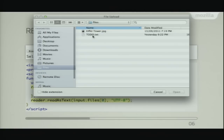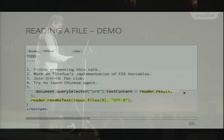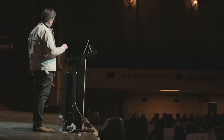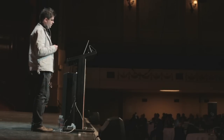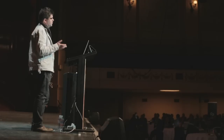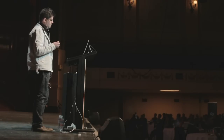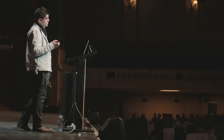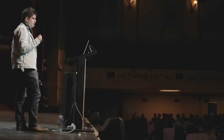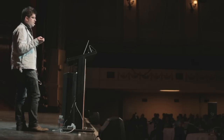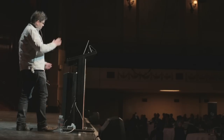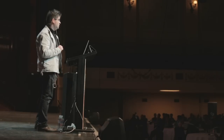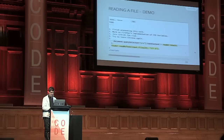There we go — it's displaying the contents of the file right there. That encoding parameter passed into readAsText is actually optional. If your file is in a Unicode encoding like UTF-8 or UTF-16, the browser will use some heuristics to determine what it is. So probably you're all storing things in UTF-8 anyway and don't need to specify that — which is why those non-ASCII characters display correctly.